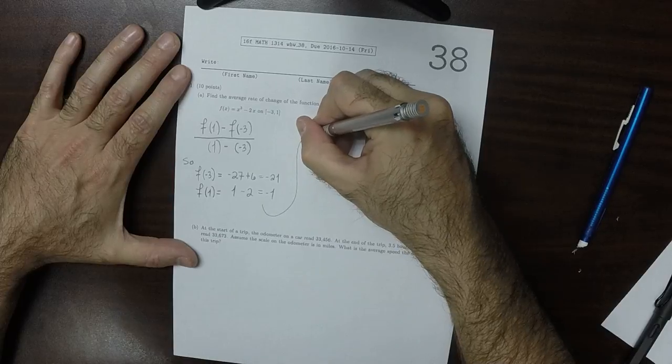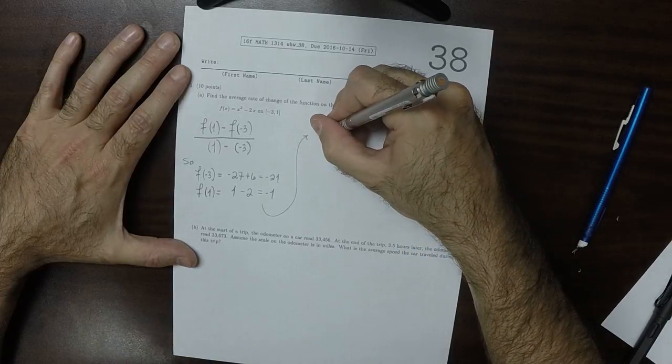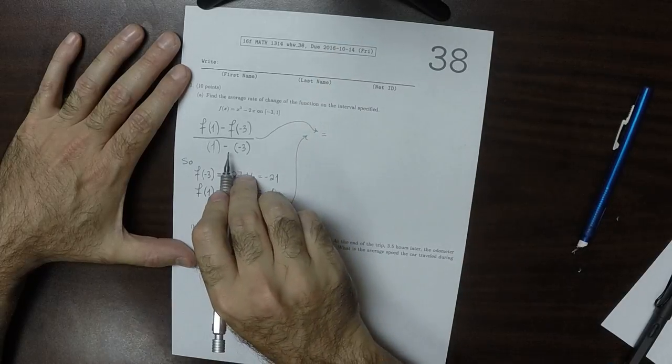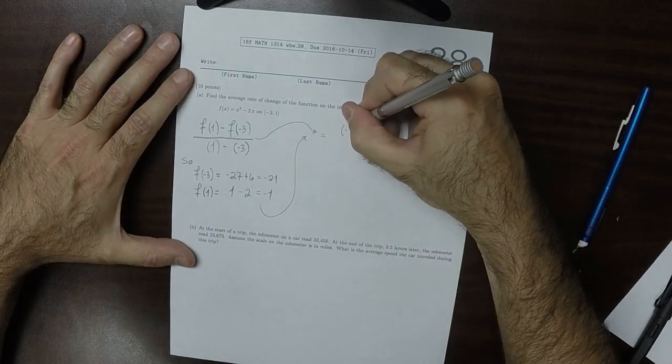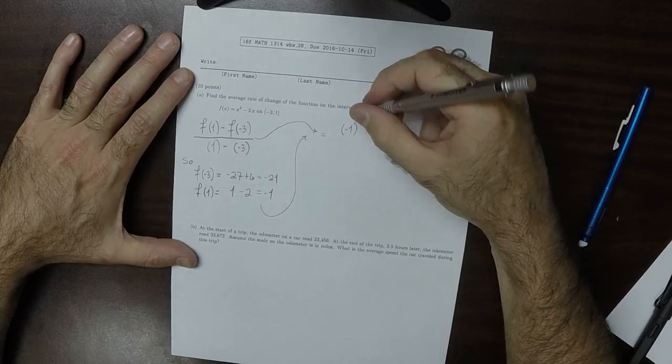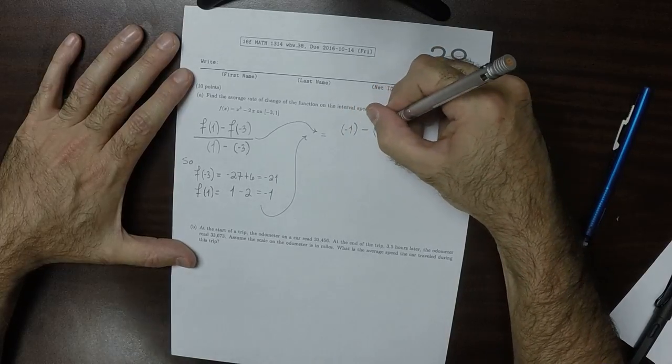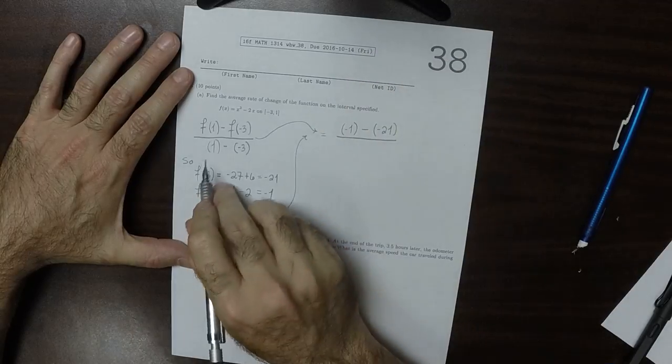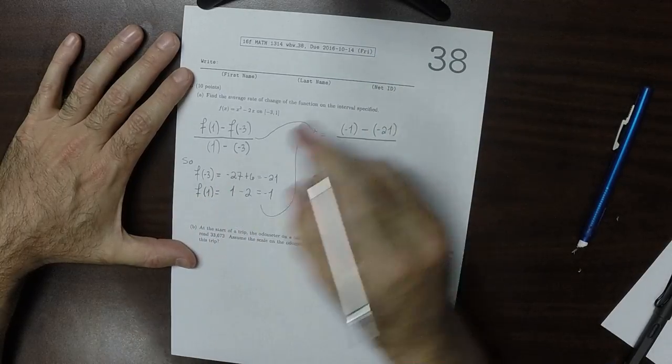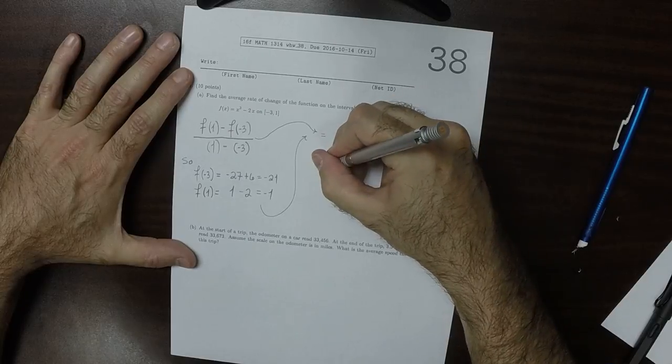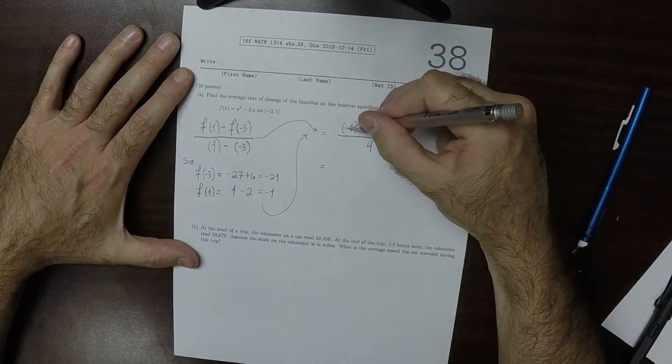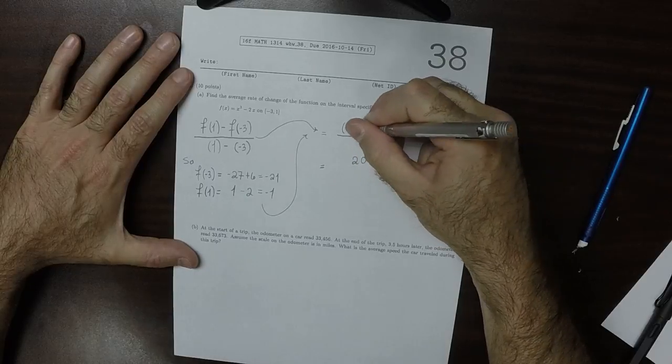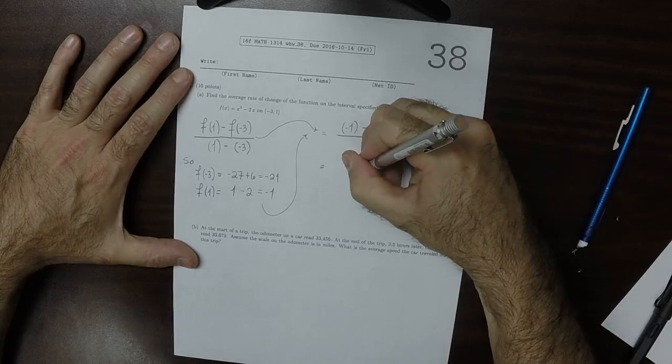And then taking these together, so that would mean we'd continue this expression as the following. It would be negative 1, and then minus negative 21, and then divided by 1 minus negative 3 is 4. So that would be negative 1 plus 21. That would be 20 over 4, which is 5.